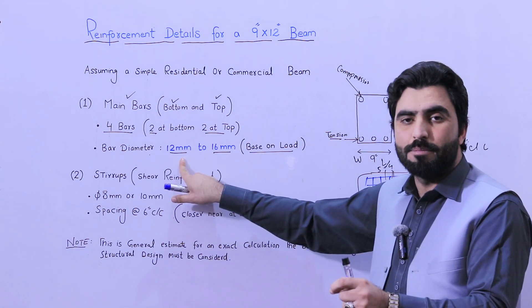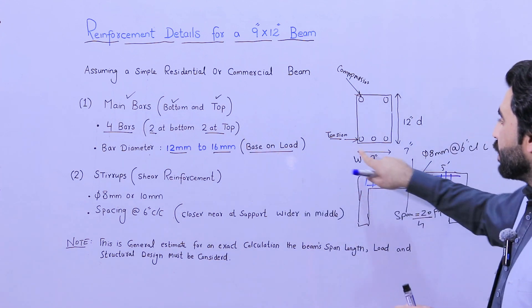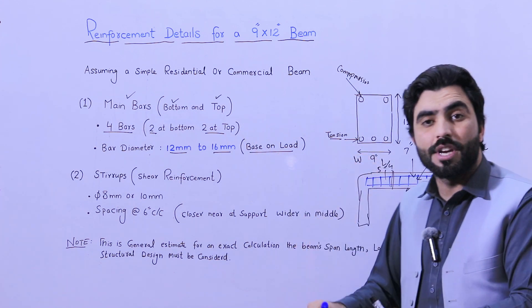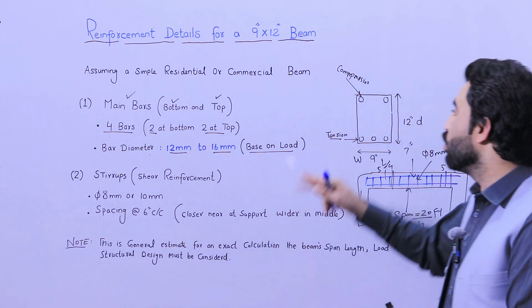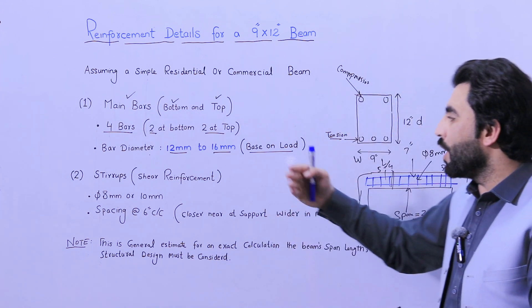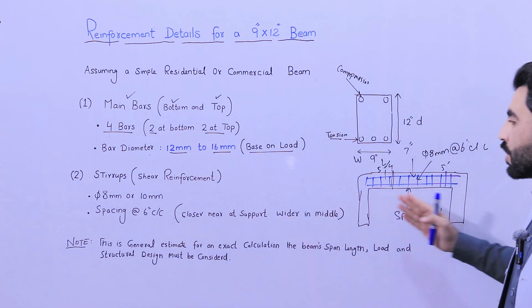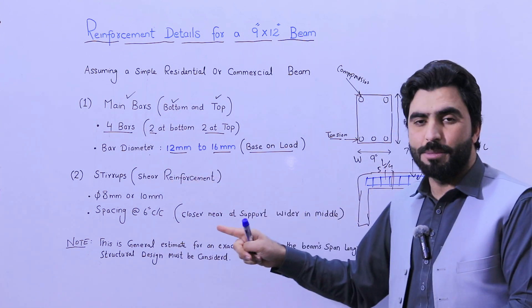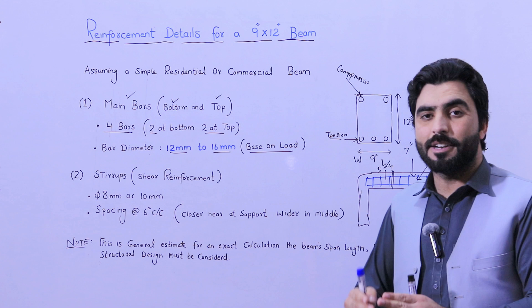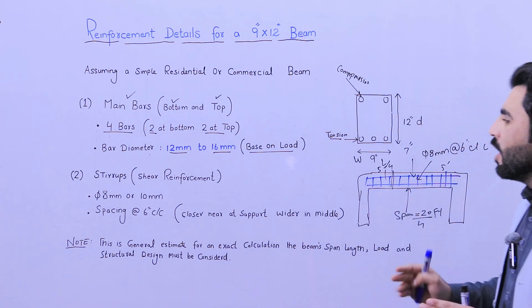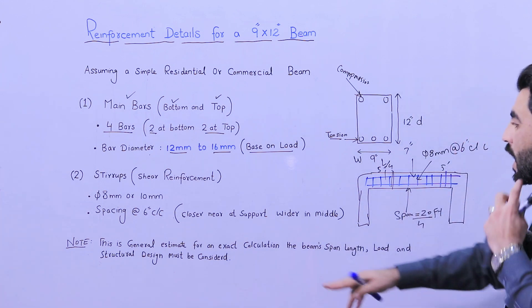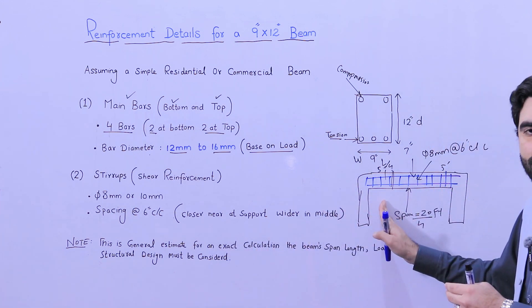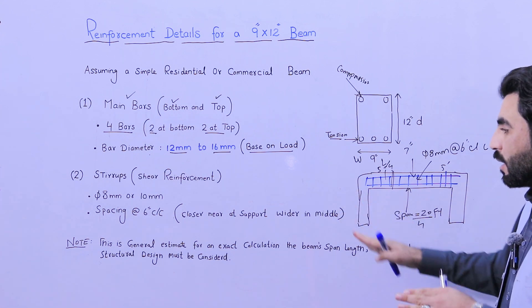Three at the bottom because this is tension zone - concrete is weak in tension, so use more numbers of bars compared to at the top portion - and two bars at the top. Now I'm talking about the stirrup, so the stirrup dia should not be less than eight millimeter or 10 millimeter, but eight millimeter is best with the spacing of six inches. The stirrup should be provided closer near at support - the distance of L by four - and wider at the middle.